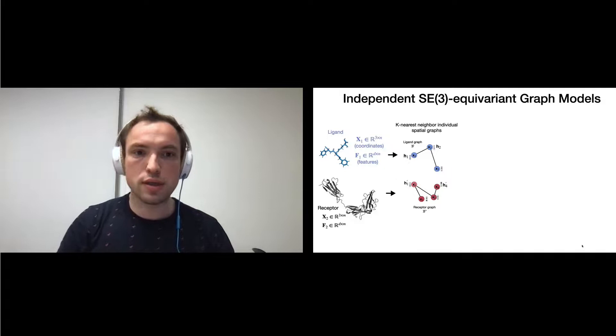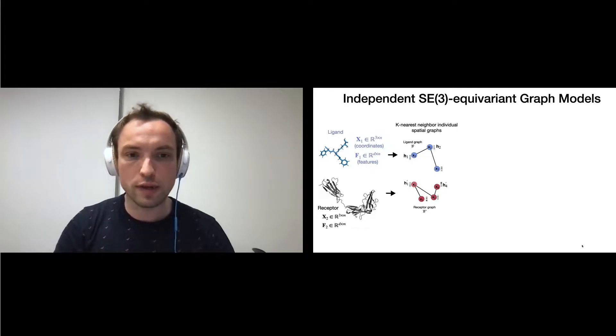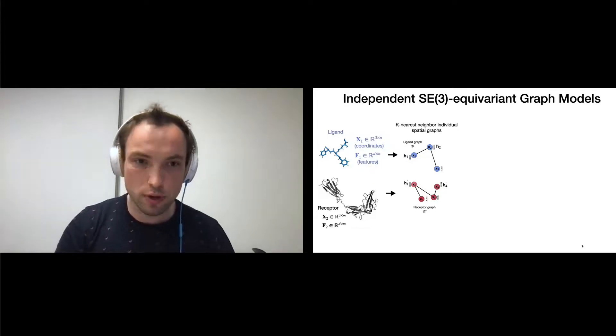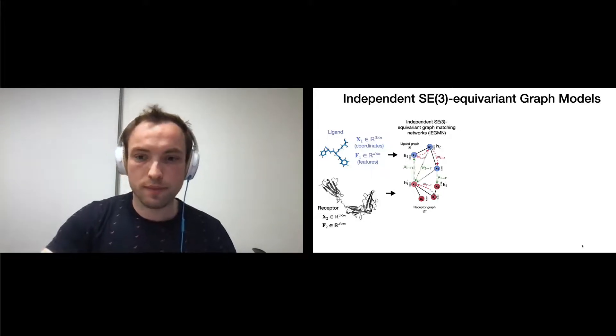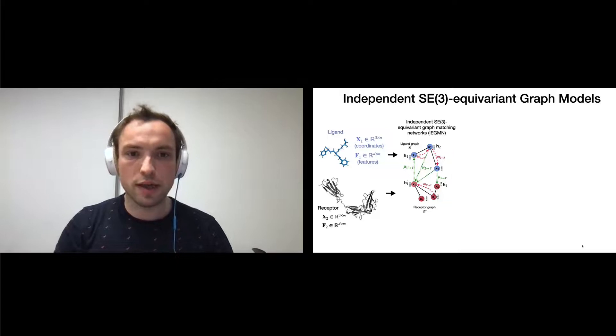The way our architecture works is that it first converts the two individual molecular structures into k-nearest neighbor individual spatial graphs, and then applies previously developed independent SE(3) equivariant graph matching networks, which consist of intra- and inter-neural messages.